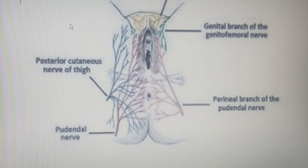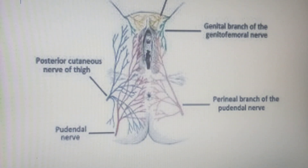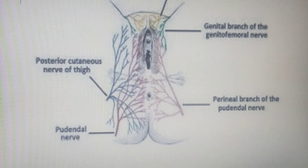Venous drainage is by the labial veins, which are tributaries of the pudendal veins.